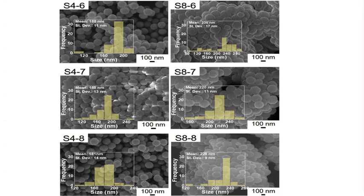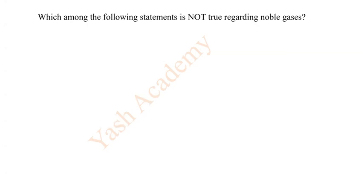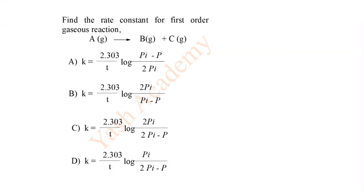Find the rate constant for first order gaseous reaction A gives B plus C. Here you have to find out the correct answer and correct answer option is D.